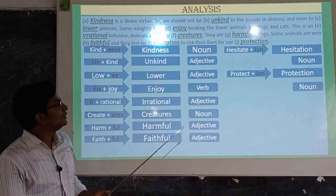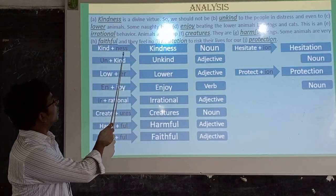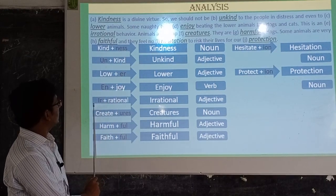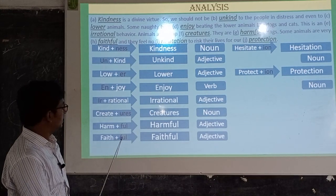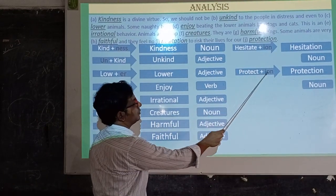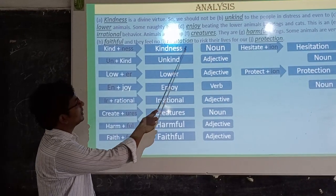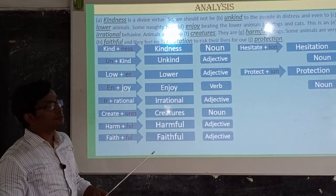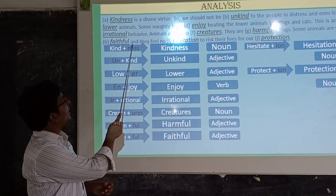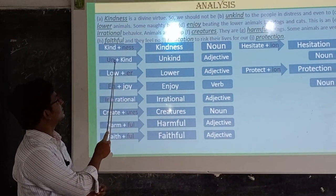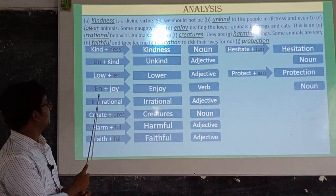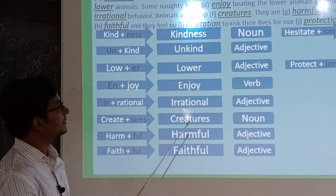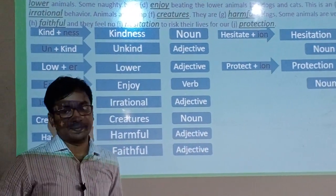So you see, with the root word we have added so many letters or groups of letters: -ness, un-, -er, en-, ir-, -ures, -ful, -ful, -ion, -ion. And these words have become new words. The new words become noun, adjective, verb — new parts of speech. Here -ness is a suffix, un- is a prefix, -er is a suffix, en- is a prefix, ir- is a prefix, -ures is a suffix, -ful is a suffix, -ion is a suffix.